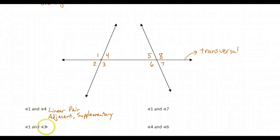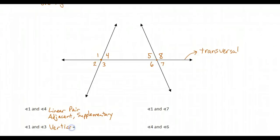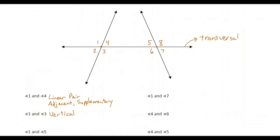Angles one and three: here's angle one, here's angle three. They share a vertex, but their sides form two lines. That means that one and three are vertical angles. And by the vertical angles theorem, vertical angles will be congruent.